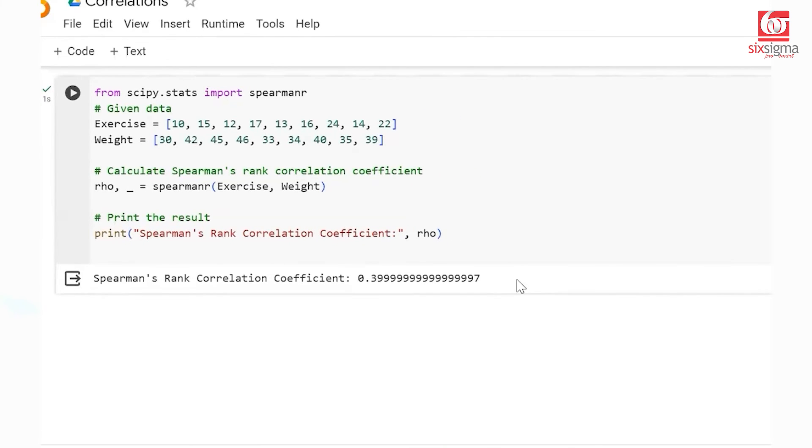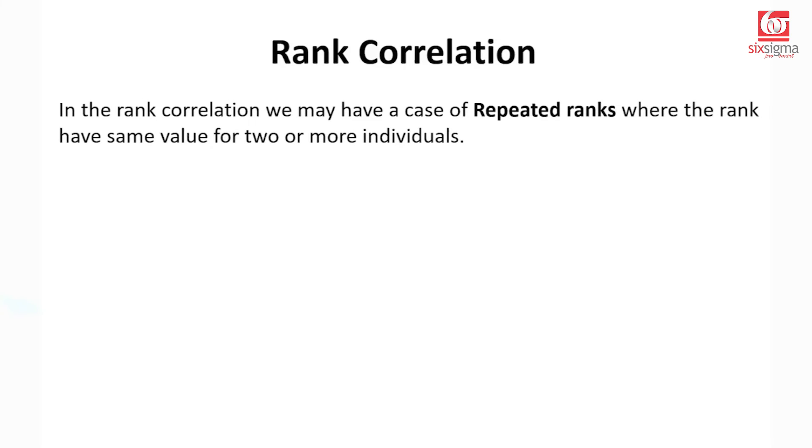So this is Spearman's rank correlation. Useful when your data does not necessarily follow a linear relationship, but follows a monotonically increasing or decreasing relationship.